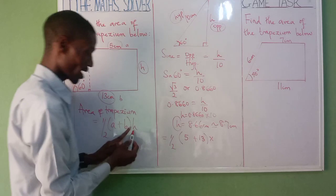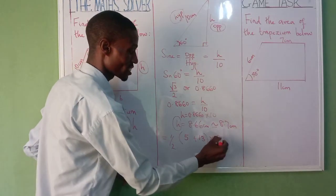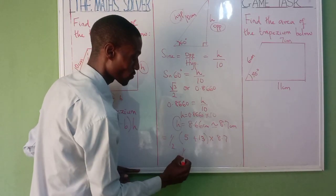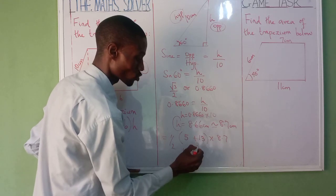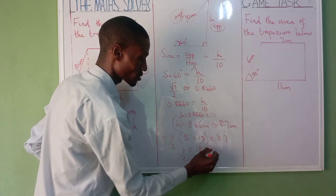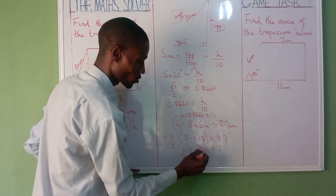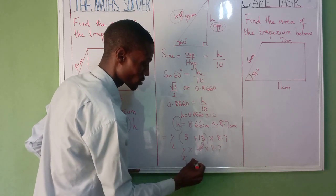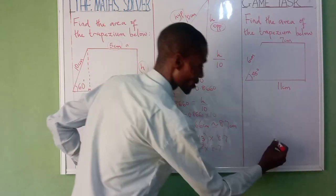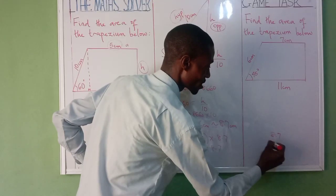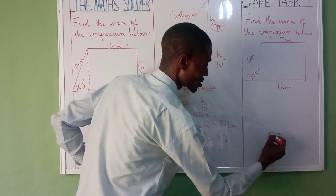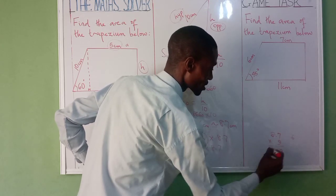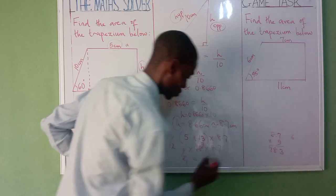So we now have 1 over 2 times (13 plus 5) - that's going to be 18 - times 8.7. So it goes on this one: 9. So let me now have 8.7 times 9. Let's now apply it. 8.7 times 9 - this is 3, remember, 6. This is 72, that's 78. So your answer is 78.3 centimeter square. Very simple.